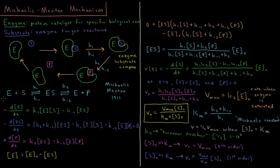For the enzyme-substrate complex, -d[ES]/dt equals (K2 + K-1) times [ES] for the ways we consume ES, minus the ways we produce ES: K1 depending on [E][S] and K-2 depending on [E][P]. For the product, d[P]/dt equals K2 times [ES] for production minus K-2 times [E][P] for consumption.